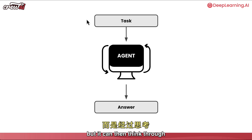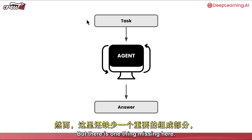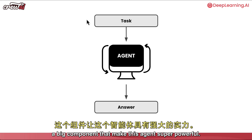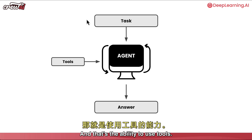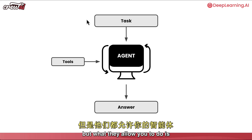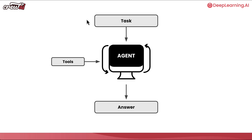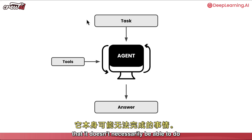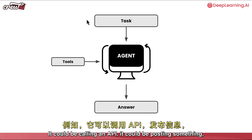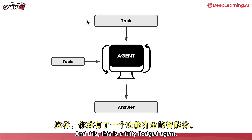Once you reach that stage, you can pass a task to this agent, and throughout this thinking process the agent can come up with a better answer - not just the first answer it would have given, but it thinks through and optimizes the answer to the point that it satisfies itself. But there's one big component missing that makes an agent super powerful: the ability to use tools. Other frameworks might call them skills or capabilities, but they allow your agent to interact with the external world - calling an API, posting something, gathering a data point, whatever that might be. That creates a fully fledged agent.